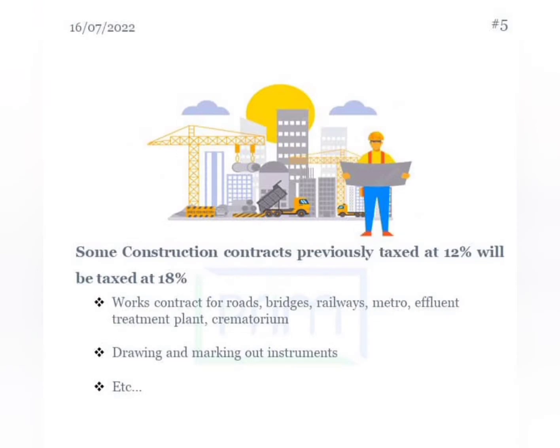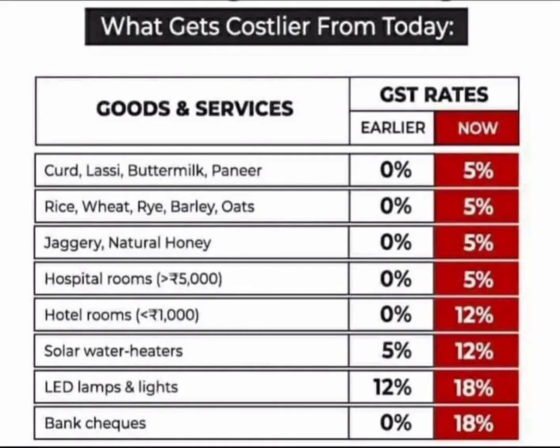Coming to the next point: some construction contracts - for example, roads, bridges, railway, etc. Previously these attracted 12% GST. Now the GST rate will change. There are old roads and new roads, and once the updated provisions apply, a 5% GST rate will be available for such construction contracts.